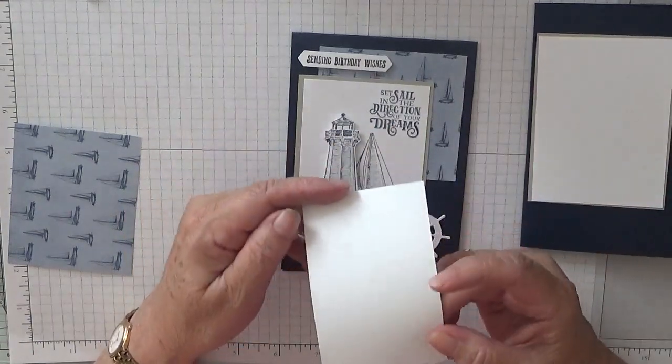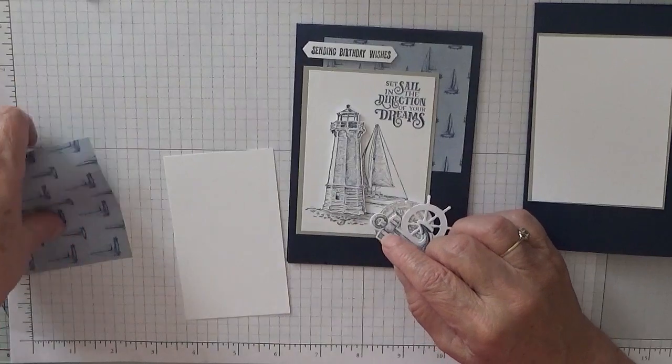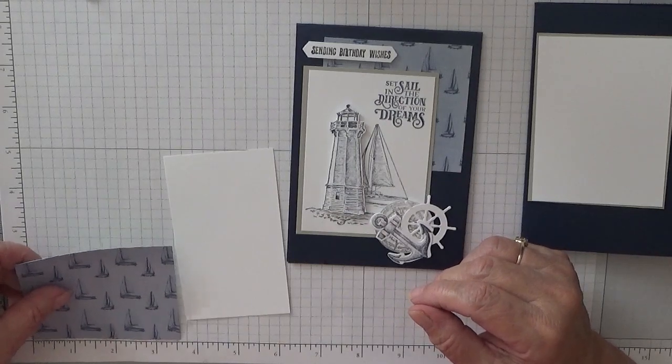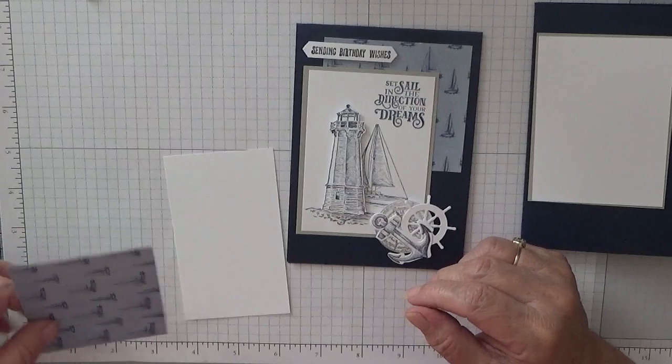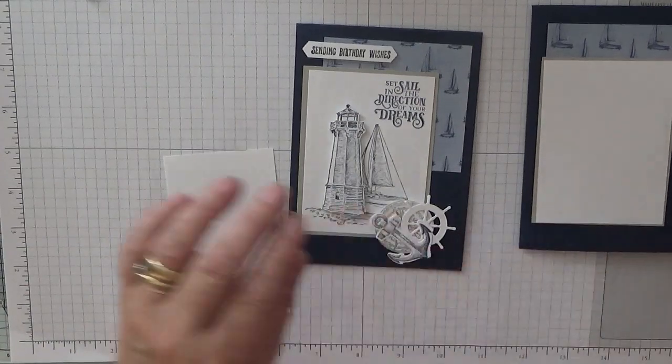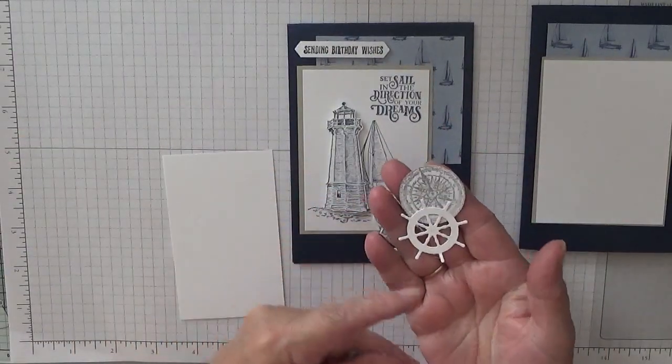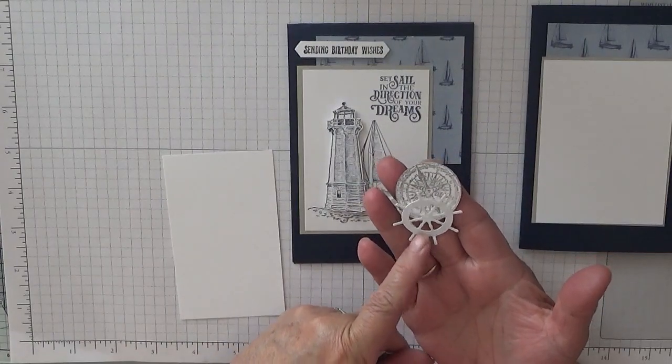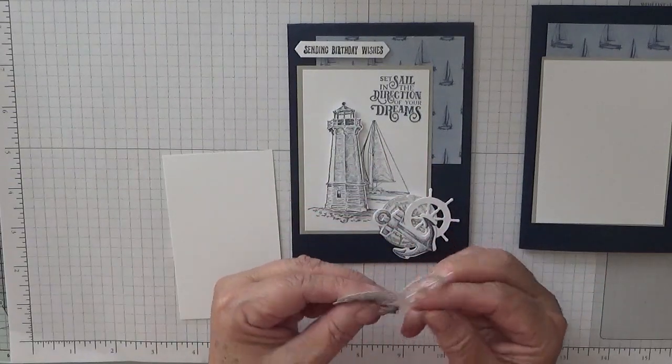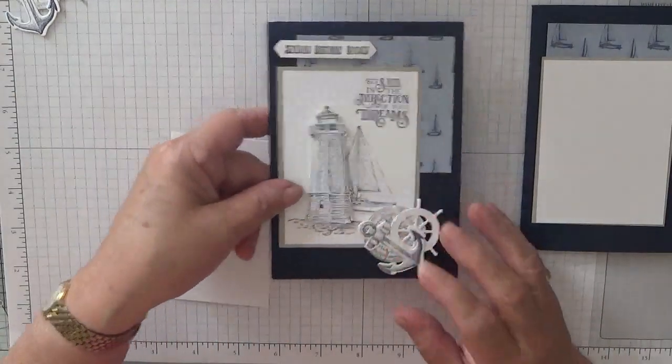A scrap of white for the lighthouse because we're going to cut it out. A piece of designer series paper at three and a half by two and seven eighths, and that will go there. These bits here I've already cut out which is a compass, steering wheel I think they're called a wheel, and an anchor. So that is what I've already done.